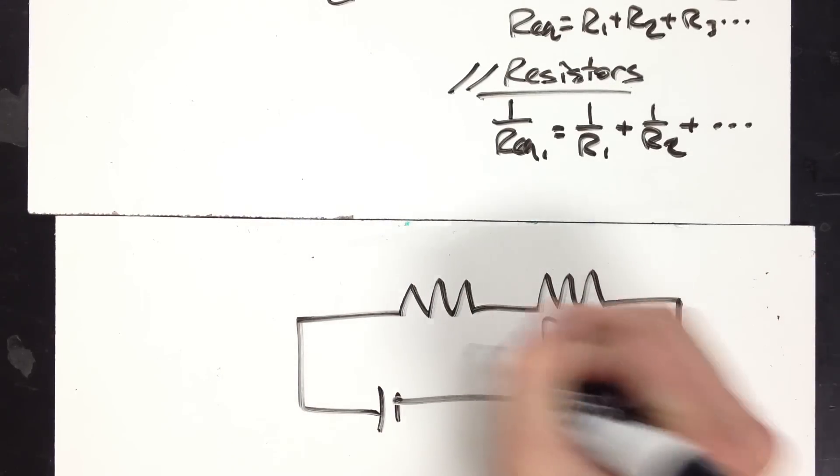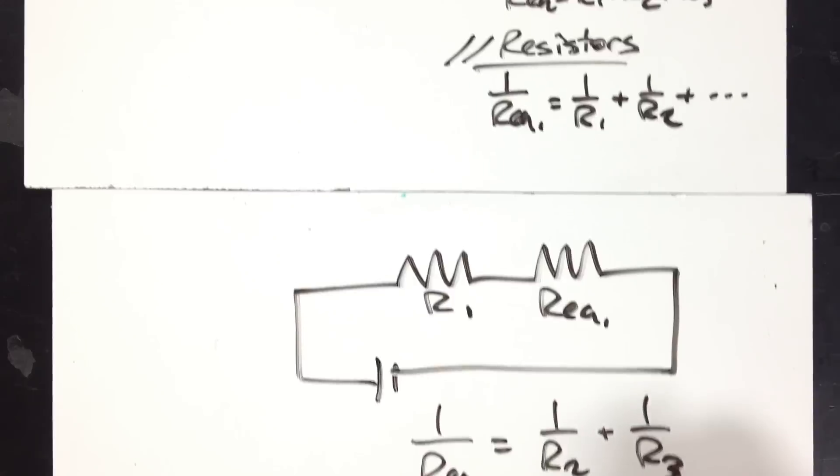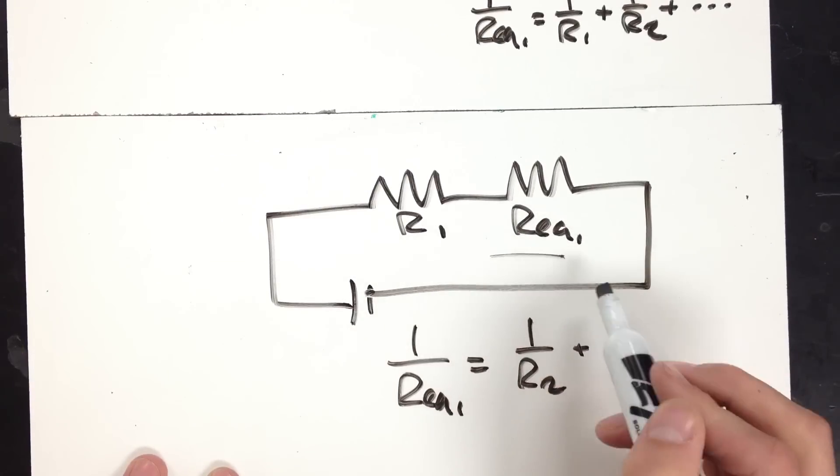This would be REQ1 and this is still R1. 1 over REQ1 is going to be 1 over R2 plus 1 over R3. So you can solve for that value.